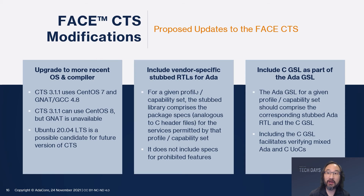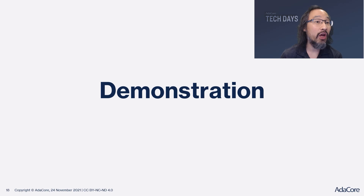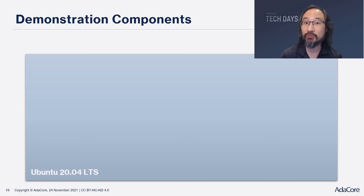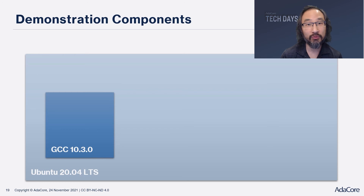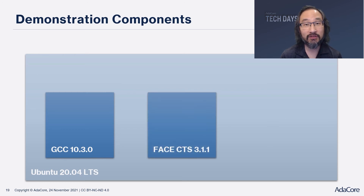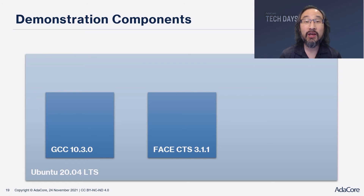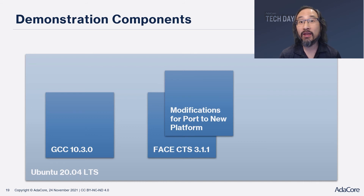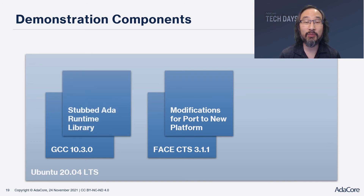Let's get on to a demonstration of our proof of concept. We have constructed a Docker container as a sandbox, populated with Ubuntu 20.04 LTS as our operating system. We've installed GCC 10.3.0, which comes with Ubuntu. We have installed the latest FACE CTS, which is version 3.1.1. In order to get the CTS to work on this different operating system, we had to make some tweaks to where the CTS expects to find certain executables and paths, so we've added some modifications to this CTS. And the demo itself includes the stubbed Ada runtime library that we've developed and our sample code.